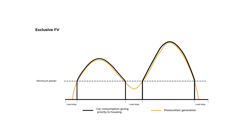Exclusive photovoltaic: the car is recharged only with the surplus generated by the photovoltaic system. The surplus will be at least 1.5 kilowatts. If the photovoltaic power is insufficient, charging will stop.